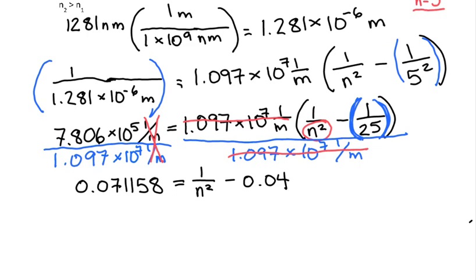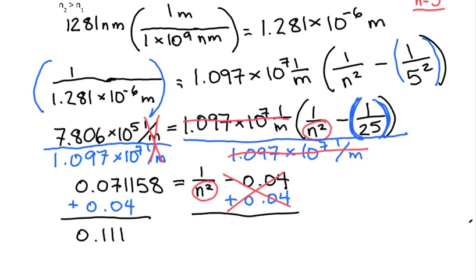We're almost there, getting closer. Algebra is looking slightly simpler. We're still trying to isolate n squared, so we're going to add 0.04 to both sides. That gets rid of it on the right hand side. 0.071158 plus 0.04, 0.111158 equals 1 over n squared.